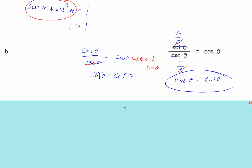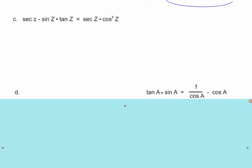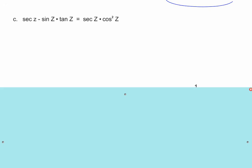Just be careful in falling in love with using the ratios — they don't always take you there by the easiest route. Let's try another one: secant z minus sine z times tangent z equals secant z times cosine squared z.